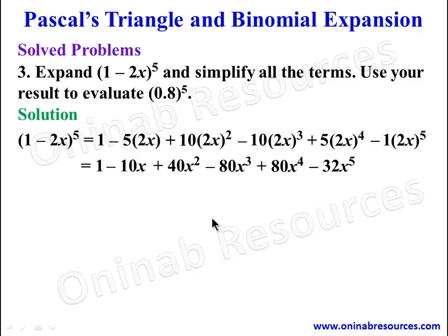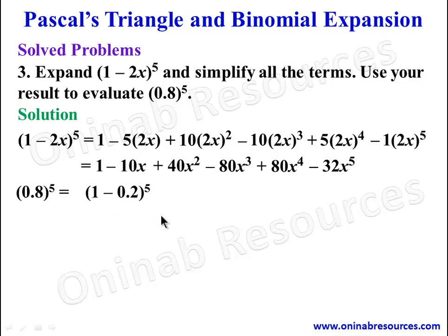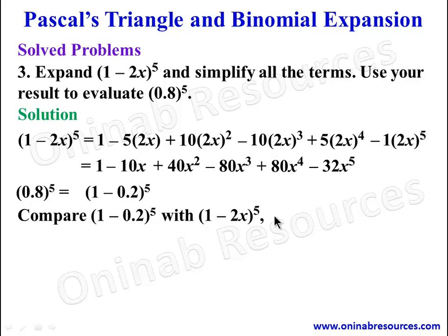To evaluate 0.8⁵, note that 0.8 = 1 − 0.2. Comparing (1 − 0.2)⁵ with (1 − 2x)⁵, we get 2x = 0.2, so x = 0.1. We substitute x = 0.1 into the expanded expression.